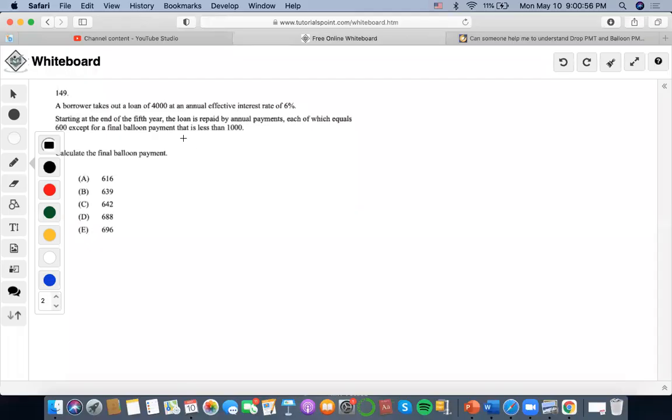Hi, so for this one it says that a borrower takes out a loan of $4000 at an annual effective rate of 6%. Starting at the end of the fifth year, so we have zero, one, two, three, four, five. Starting at the end of the fifth year, that is when the loan is going to be repaid.